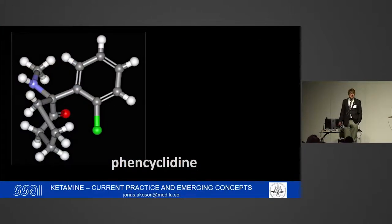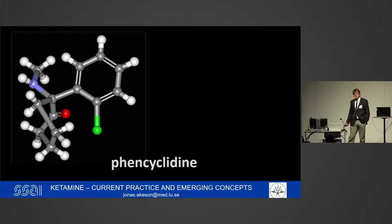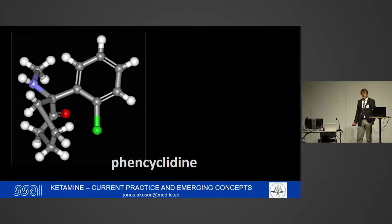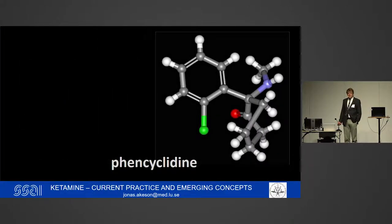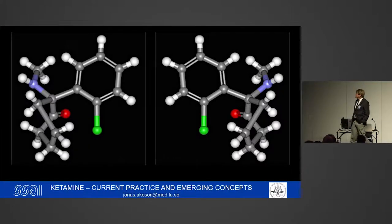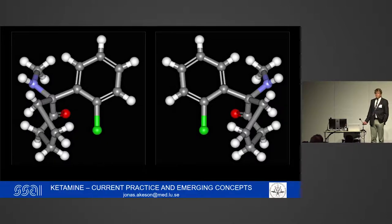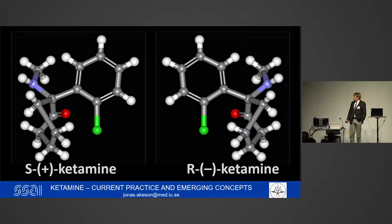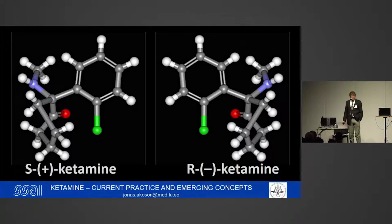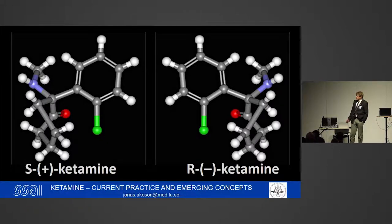This is ketamine. This is S-ketamine, or plus ketamine — a left enantiomer — and it's a phencyclidine derivative. This is R-ketamine, or right ketamine. And these two form equal proportions in racemic ketamine.